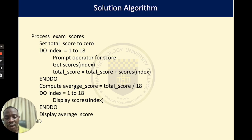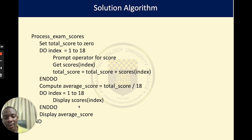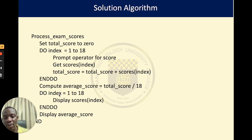The next step is to calculate the average score by dividing the total score by 18 — the total number of examination scores received. Once that is done, we go through the array again to display the content of each compartment. We display using the keyword 'display', followed by the array name and the index or compartment we want to access. By wrapping this in a loop that runs 18 times, we display all 18 scores.